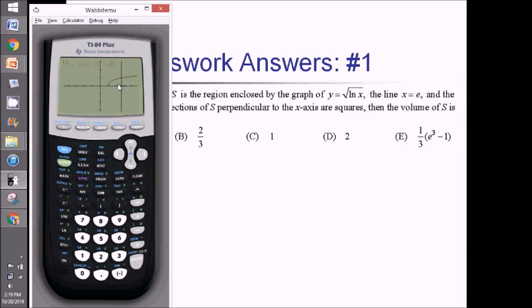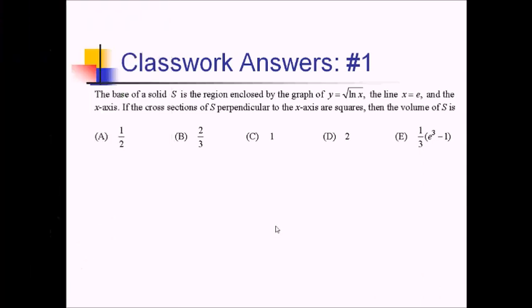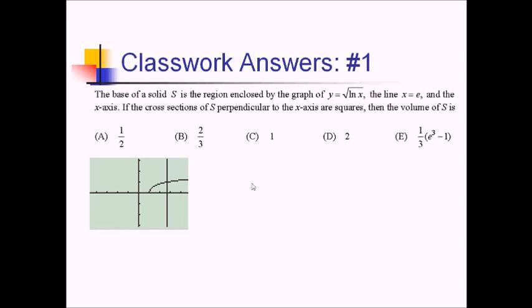So this is our region that we're going to be working with — not rotating around the x-axis, we actually have squares coming out of this. The next thing we're going to want to do is come up with our area formula for our cross-sections.